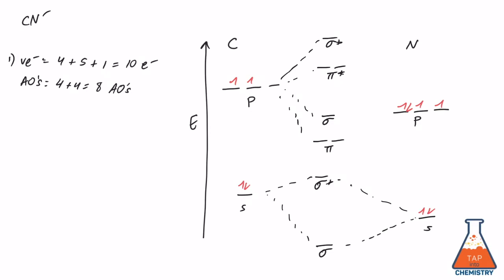But remember that whenever we have a boron, carbon, or nitrogen, the order of the first two orbitals flips. So instead of having the typical sigma-pi-pi-star-sigma-star, what we actually have is pi-sigma-pi-star-sigma-star.